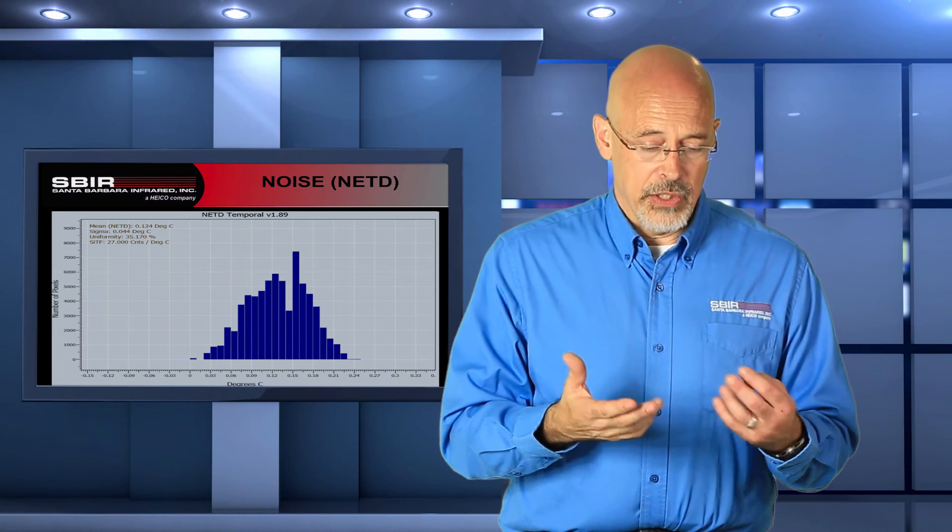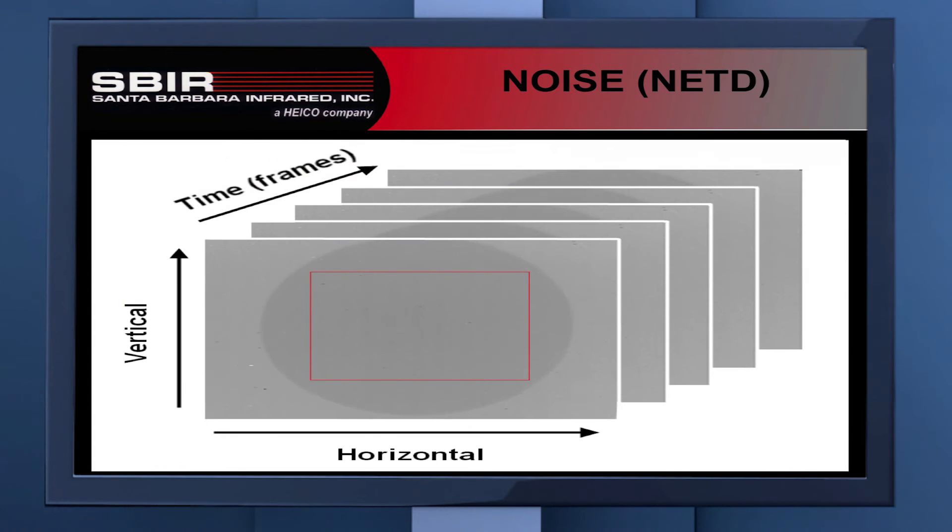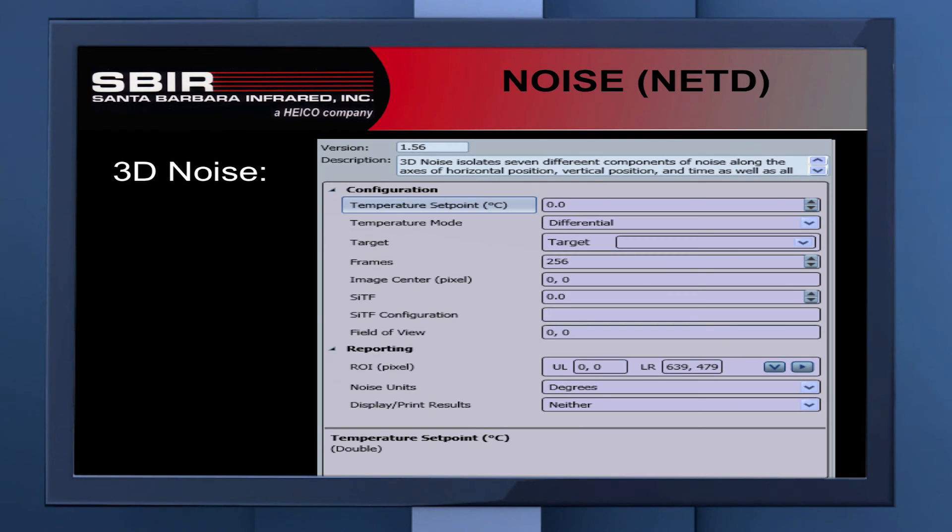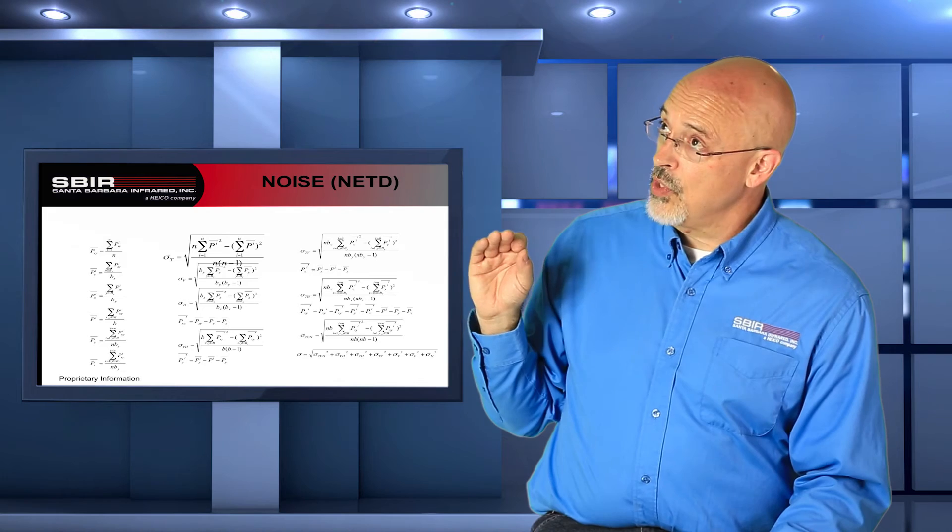The third way that we can take a measurement is what's called 3D noise. With 3D noise, we again collect a data cube. We take a series of images so that I have a horizontal, a vertical, and a time axis available to me in this data. There are a specific set of calculations that are applied. Here are the calculations. These were very well specified by the night vision lab, NVL. We walk through those series of calculations.